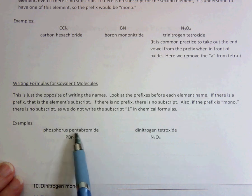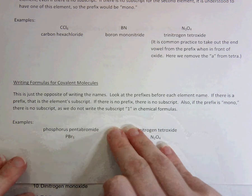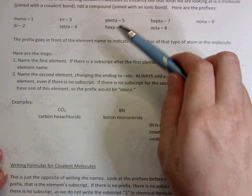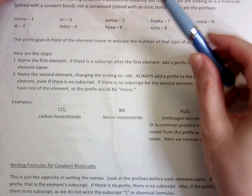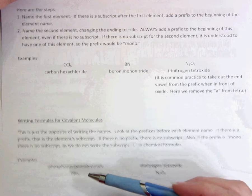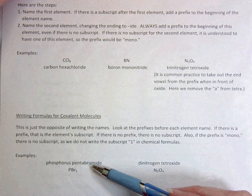Pentabromide has a prefix penta. So I look up at my list, and I know that penta is five. You will want to memorize these for one of your quizzes, by the way. Penta is five.